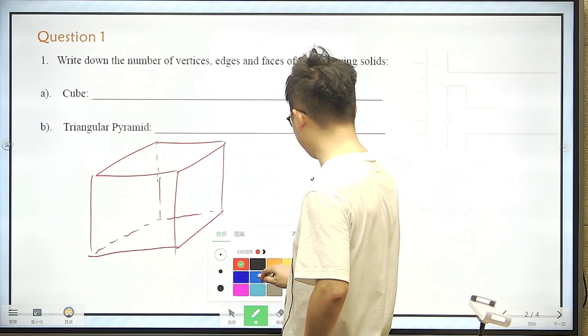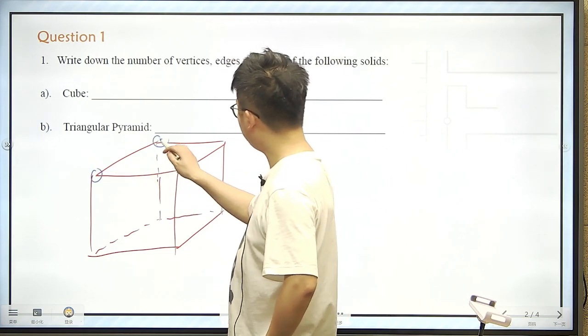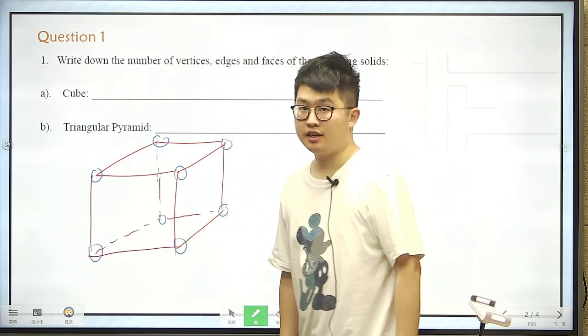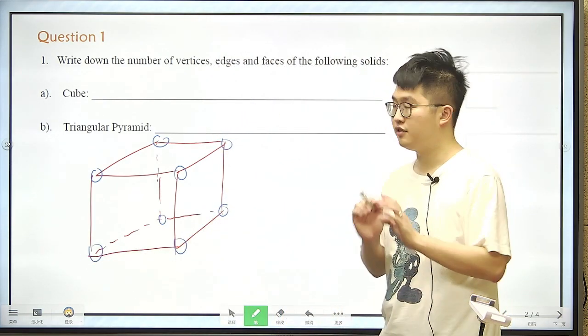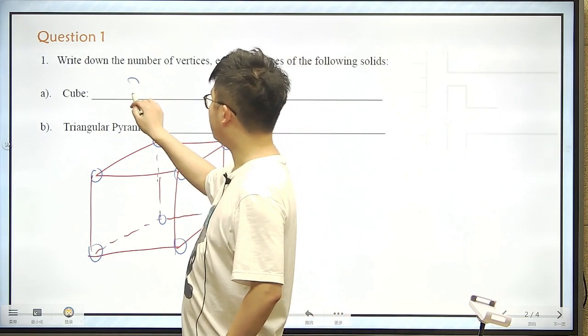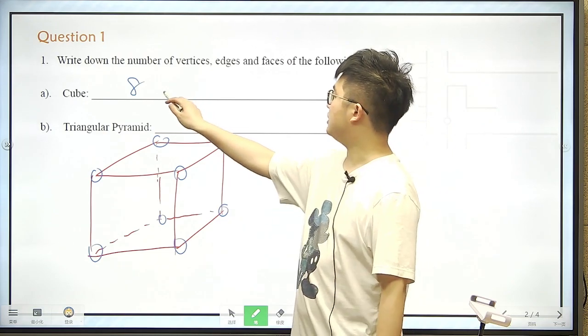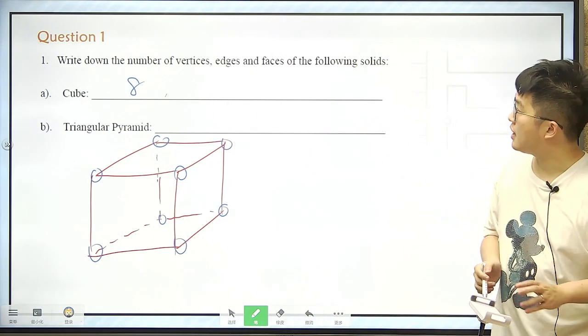So how many vertices of this cube? We can see clearly that there are 1, 2, 3, 4, 5, 6, 7, and 8. There are 8 vertices. So we just write down an 8 here, or maybe you can say there are 8 vertices. But I'm just going to write down the number.